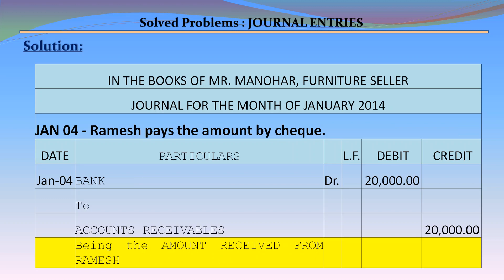January 4 – Ramesh pays the amount by cheque. Journal entry: Bank Account debit Rs. 20,000 to Accounts Receivable credit Rs. 20,000, being the amount received from Ramesh.